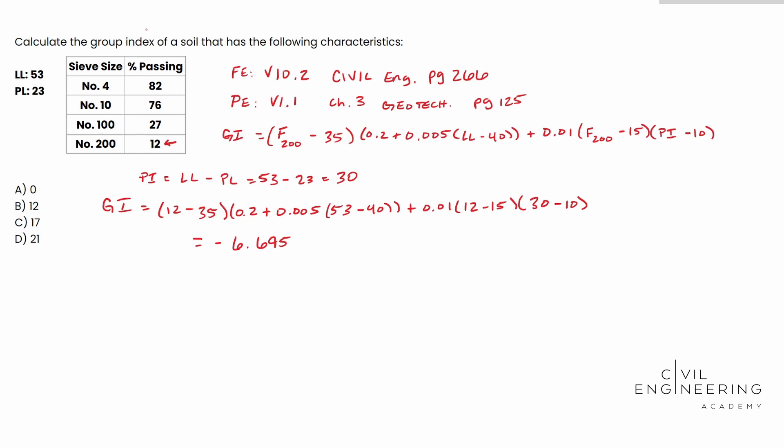A through D, there's not a negative six, negative seven, anywhere on there. And the reason why is because a negative is actually close to zero. It's actually considered zero with your group index. And a group index of zero actually means the soil is a good subgrade. It's good material for a subgrade within its particular group. And so that's basically how that's done. And so our answer is going to be A. So I hope this video helps. We'll catch you next time.